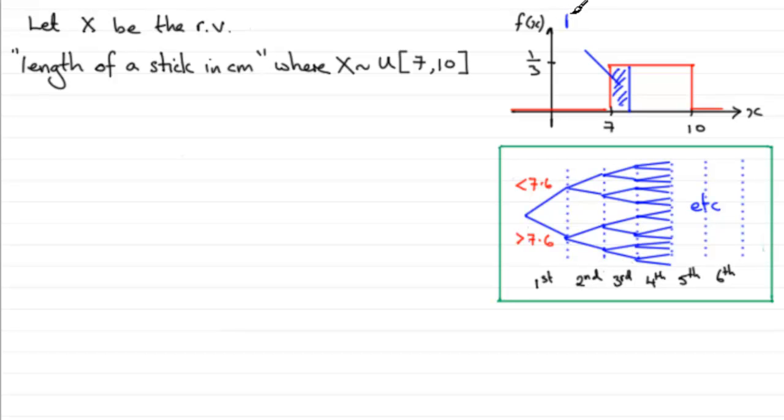So we've got that the probability that X is less than 7.6, we'll just pop that in as 7.6 there, is going to equal one third for the height, multiplied by the width there, which is going to be 0.6. And if you work that out, that comes to exactly 0.2.